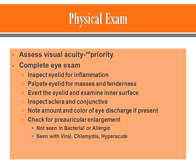On physical examination, assessing visual acuity is a priority for these patients. Then perform a complete eye exam — inspect and palpate the eyelid, making sure there are no masses or tenderness. Evert the eyelid and look at the inner surface, and inspect the sclera and conjunctiva. Document the amount and color of any discharge, and check for preauricular node enlargement, as this will help guide your diagnosis.